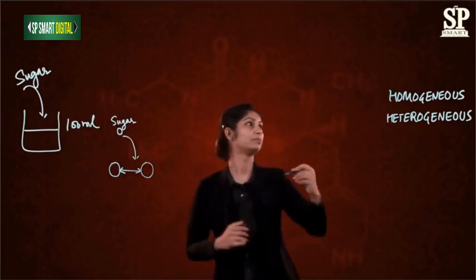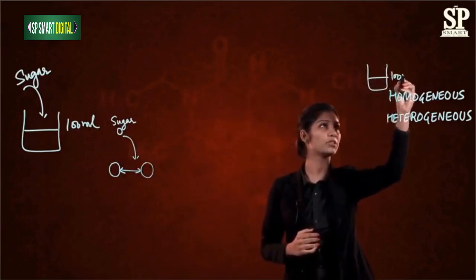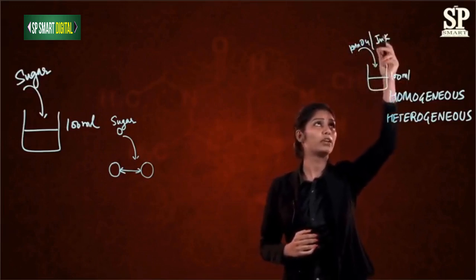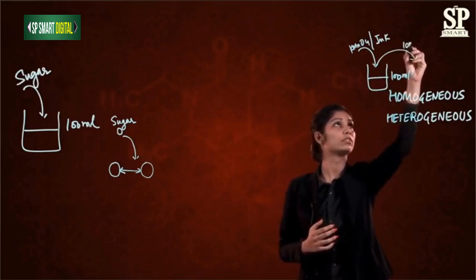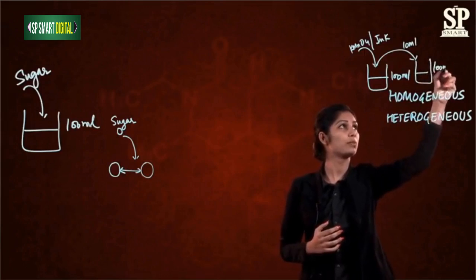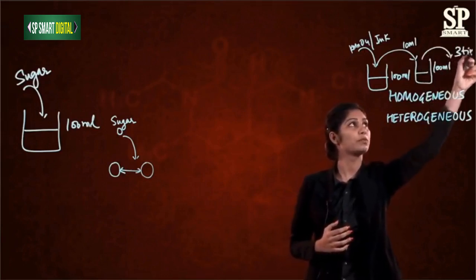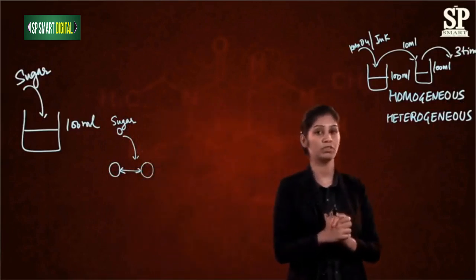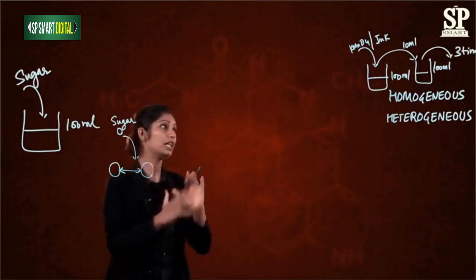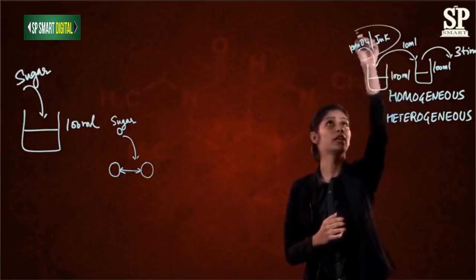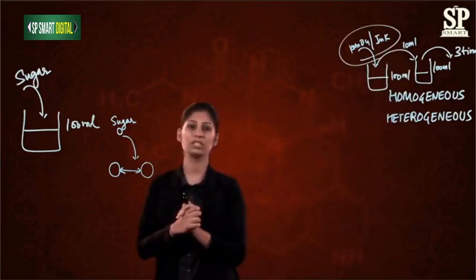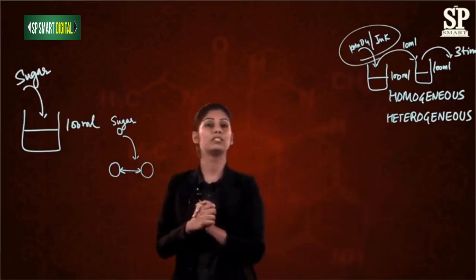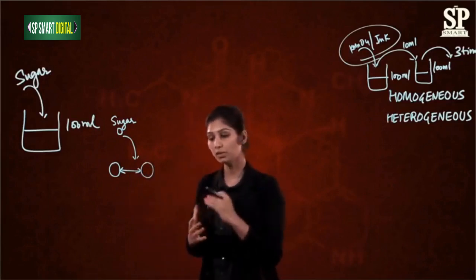To prove that particles are extremely small, let's take a beaker with 100 ml of water and add potassium permanganate or ink of any color — red or blue. Take 10 ml of this solution, add it to another beaker with 100 ml of water, and repeat this process three or four times. You will notice that the intensity of color in the beakers is not the same — it keeps decreasing with dilution. This is only possible if the particles of ink or potassium permanganate are extremely small, as they are present even in the most diluted solution. Hence, this proves that the particles of matter are extremely small in size.